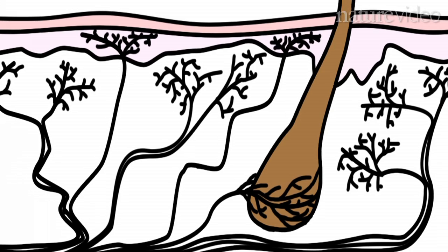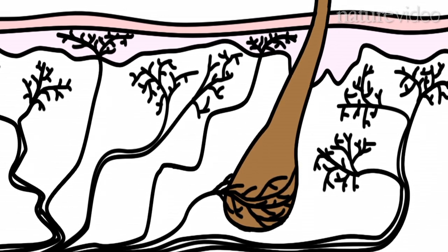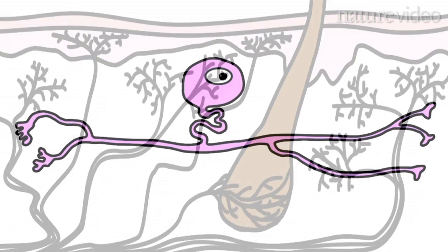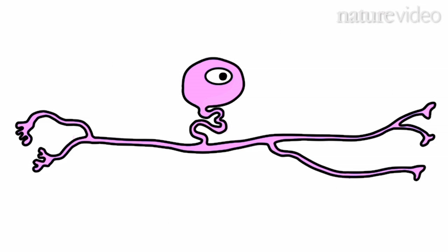To work out which ones respond to stroking and which ones respond to other kinds of touch, like poking, the team used fluorescent tags. The tags glow when the neurons are active.